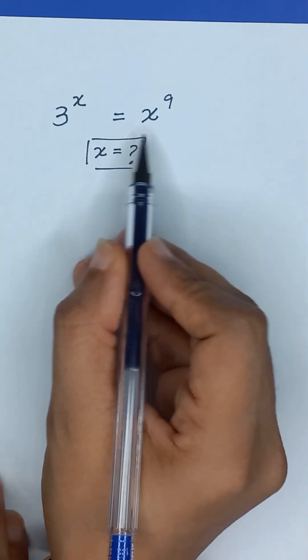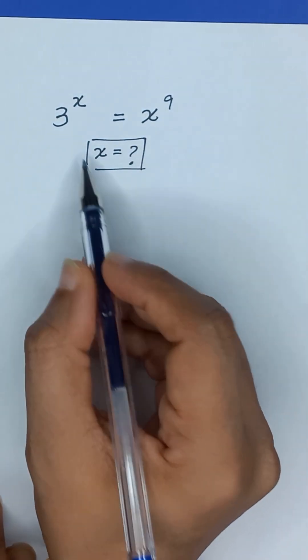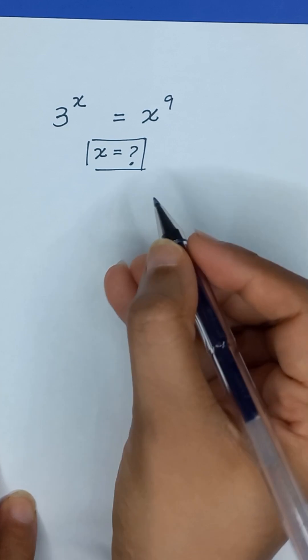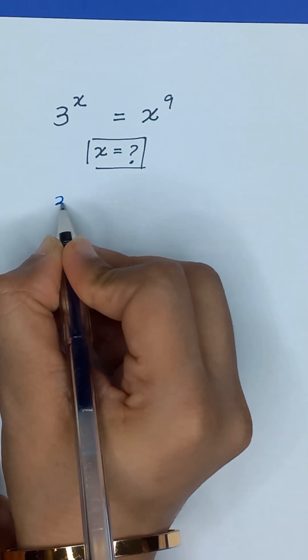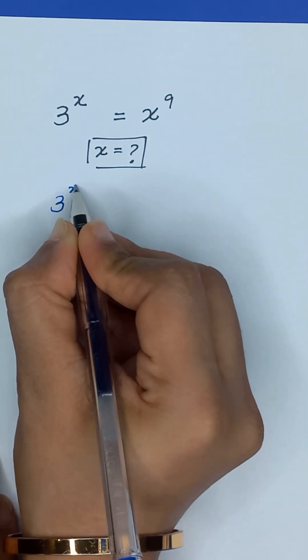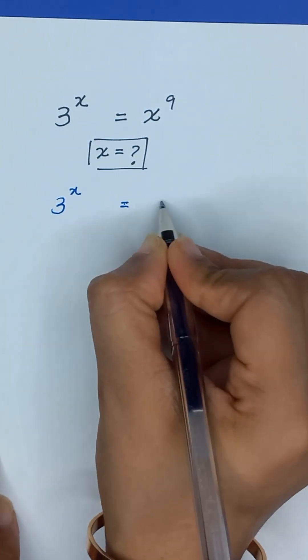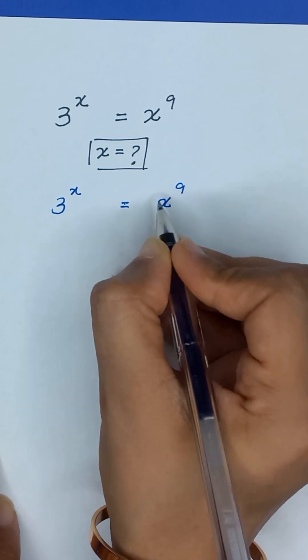3 to the power x is equal to x to the power 9, and we will solve for x. It is given that 3 to the power x is equal to x to the power 9.